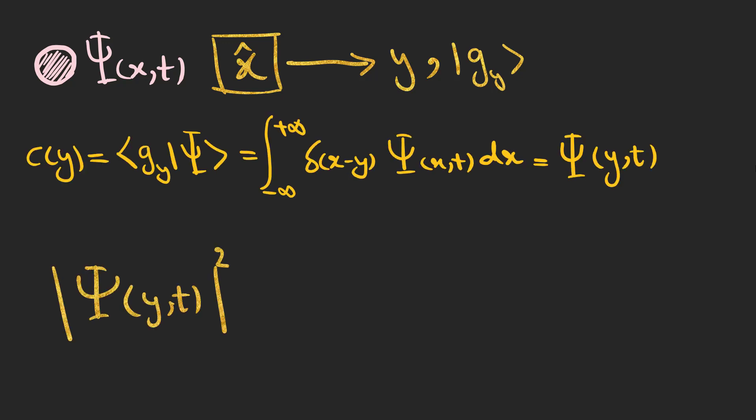To find the probability of finding the particle at position y in time t we need to calculate the expansion coefficient and here is the probability we need.